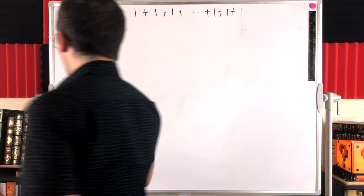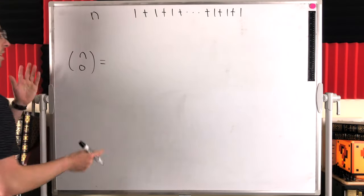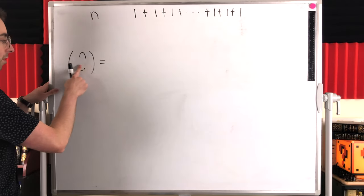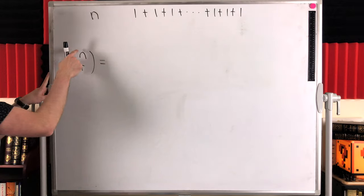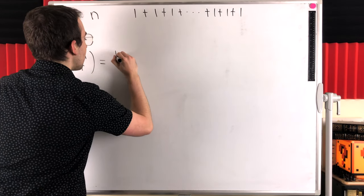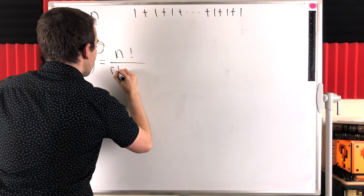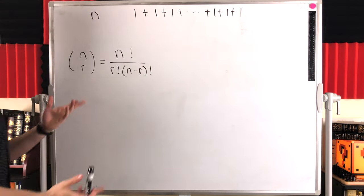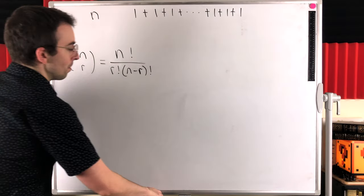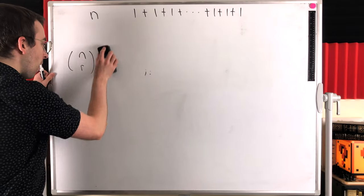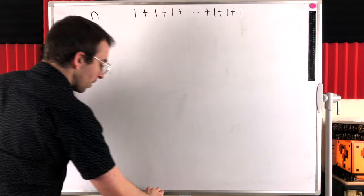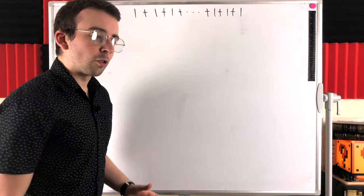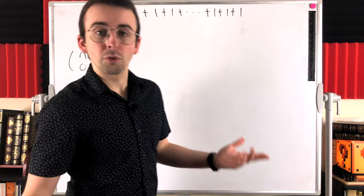So n choose 0 equals 1, meaning there's one way to write n as a sum of just 1s. Remember, this is a binomial coefficient — I'll leave a link in the description to some lessons I have on those. Quickly, if you're not familiar with them, this is read 'n choose r' and it's equal to n factorial divided by r factorial times n minus r factorial. But really, to get the most out of this lesson, you should probably already be familiar with this.